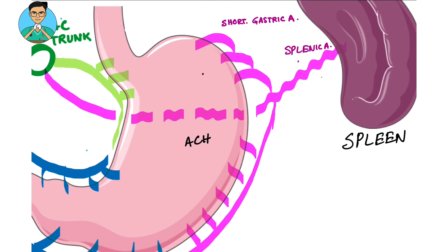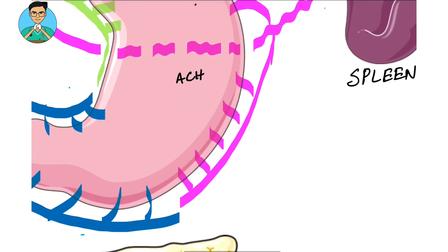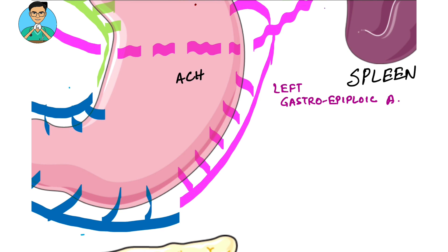The splenic artery also gives off another long artery known as the left gastroepiploic artery, which goes along the middle part of the greater curvature of the stomach and supplies it.